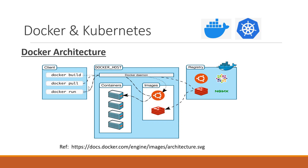For example, if you run the docker pull command, the Docker daemon will check whether the image is present in the Docker host. If it is not present, it will download the corresponding image from the Docker registry. This registry can be a public Docker registry like Docker Hub, or we can set up an internal Docker registry for the organization.